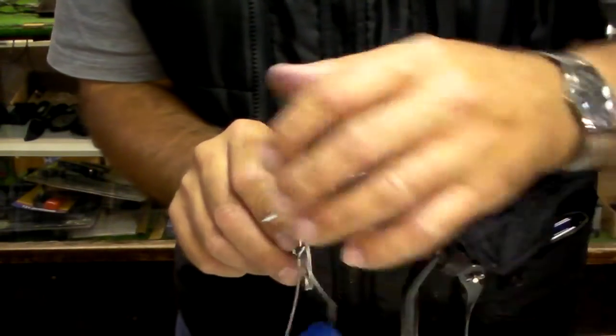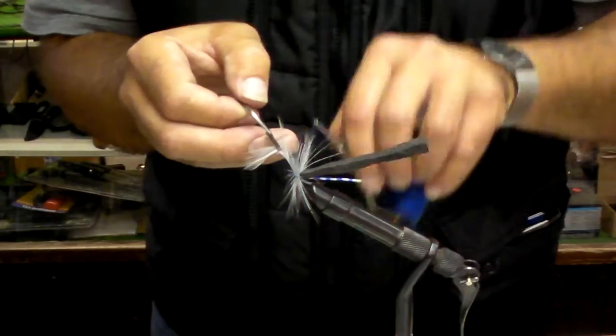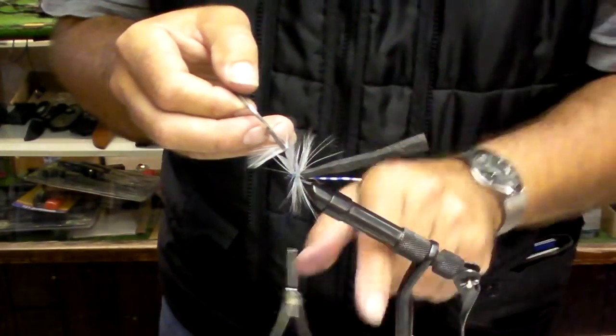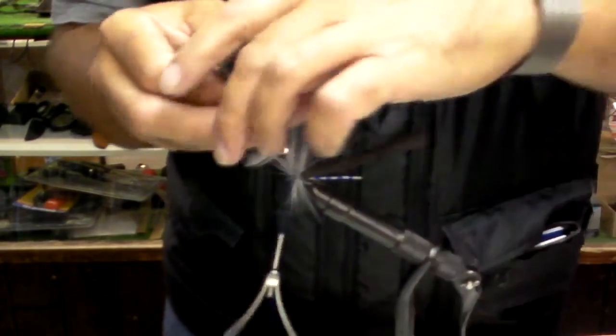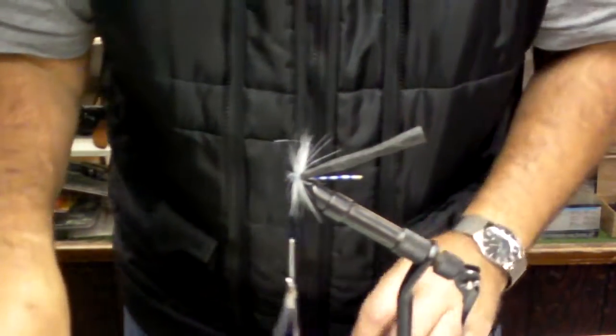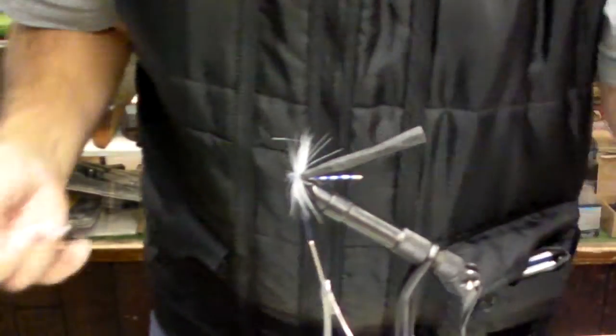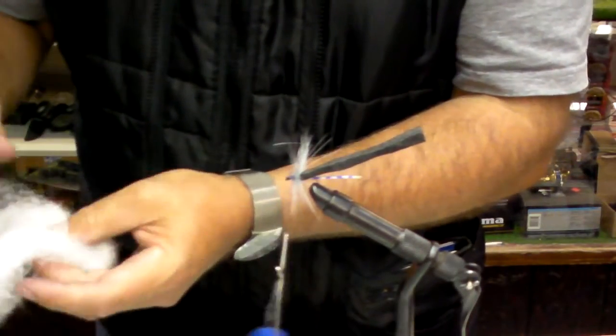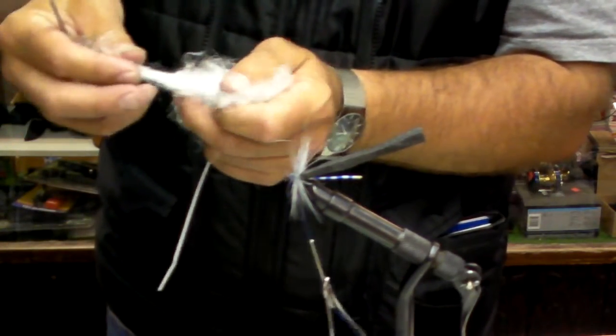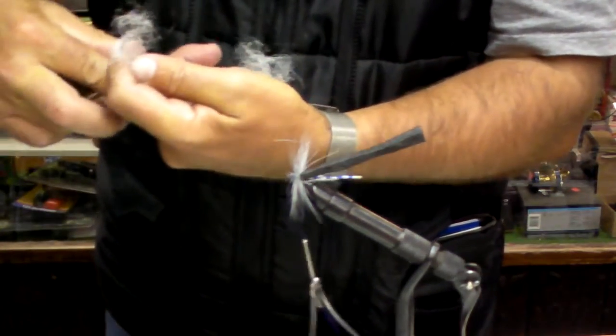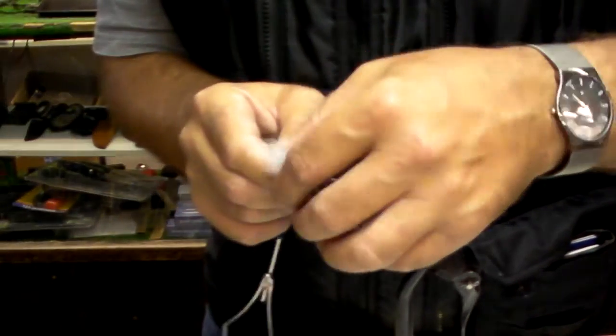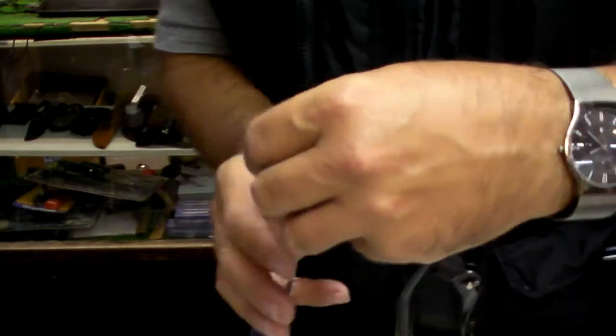Try not to trap too many of the hackles, and we're going to tie that down. That's basically the legs. Now I'm going to take some antron and put it on here for the wings. I'm just going to take about an inch and tie this on with a figure eight also.